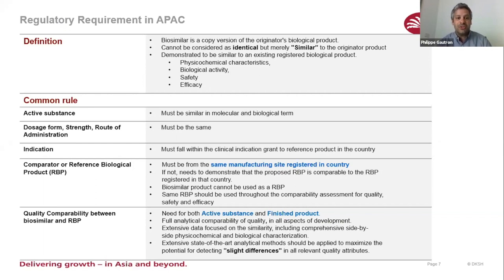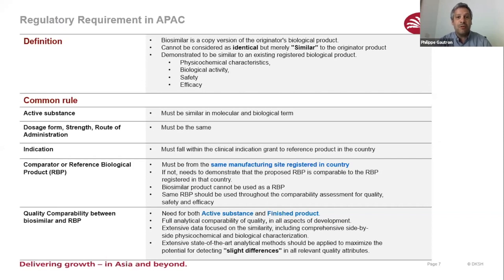The definition of biosimilarity is the same, but one very important issue is that the comparability of the reference biological product must be from the same manufacturing site. Asian countries are very picky about that. For example, I was working on a dossier where the original product in Asia was made in Japan, but the partner made the biosimilarity study against a product from a factory in France — we ultimately had to obtain a comparability study between the French and Japanese products. Quality comparable data is requested not only for finished products but also for the active substance.